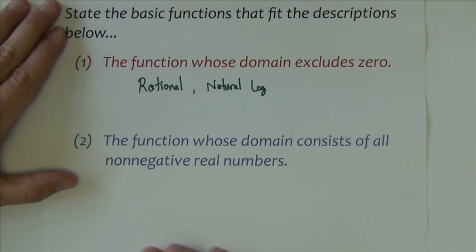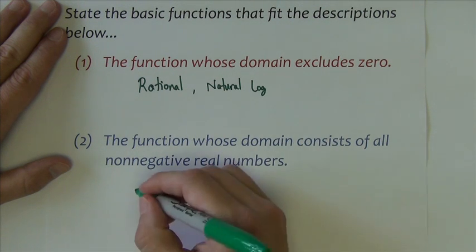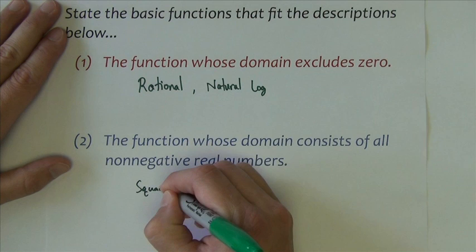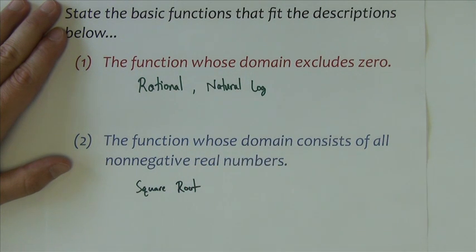The next one, the function whose domain consists of all non-negative real numbers. Non-negative means zero and numbers bigger than zero. So do we have any of the 12 functions whose domain is just all non-negative real numbers, basically excluding the negatives? And there is one: square root function. Remember, it starts at zero and then goes out to the right and includes all positive numbers.